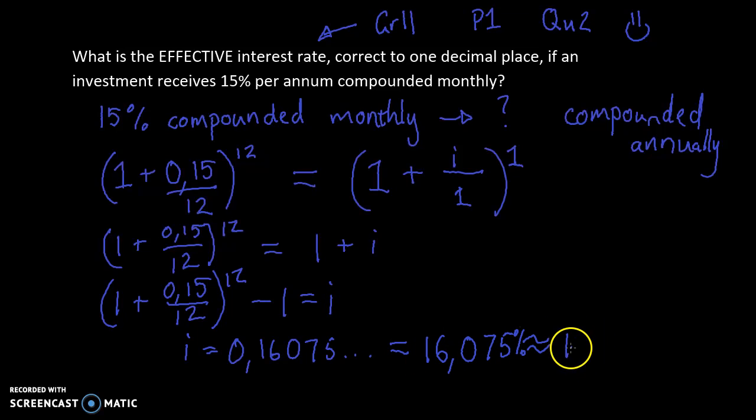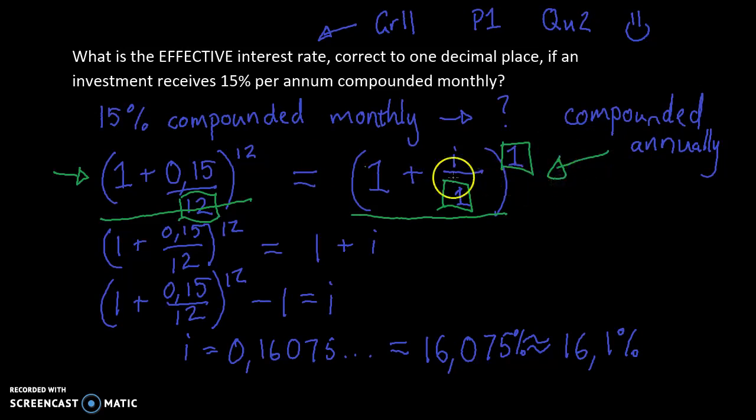So really, with a question like this, I want you to think logically. We're changing something that's being divided by 12 to the power of 12 to something that needs to be divided by 1 and to the power of 1. So we have the compound interest formula happening over here and the compound interest formula happening over here, but the difference is what it's being divided by and the power it's being raised by. This is compounded annually, and this is compounded monthly. We're changing between the two. We're converting it.